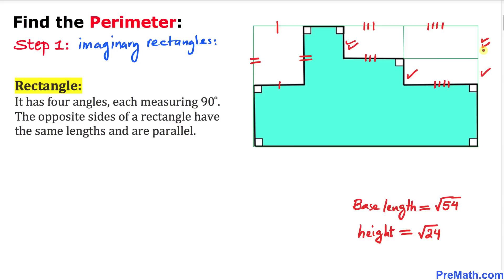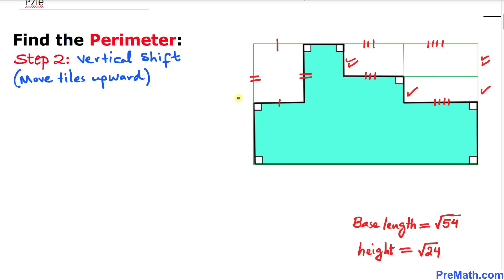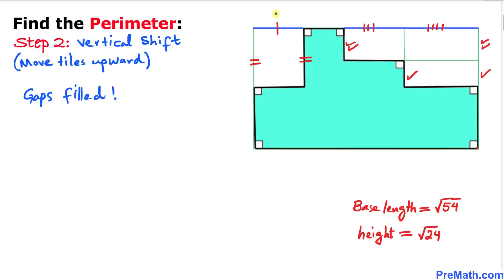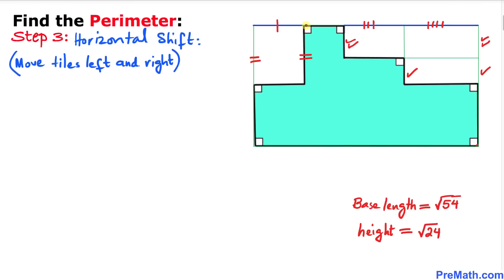Our next step: let's go ahead and move these tiles — this tile, this one, and these three tiles — shifting them vertically. Since we know these lengths are the same, they can fill the gap easily. This tile is shifted upward, and we have successfully filled these gaps.